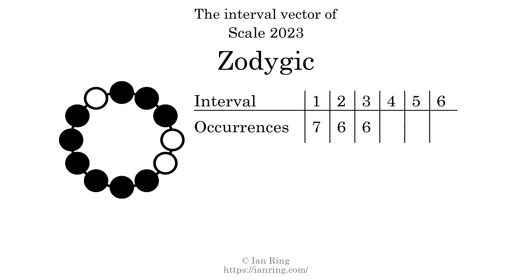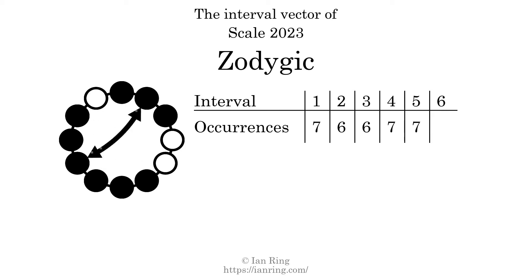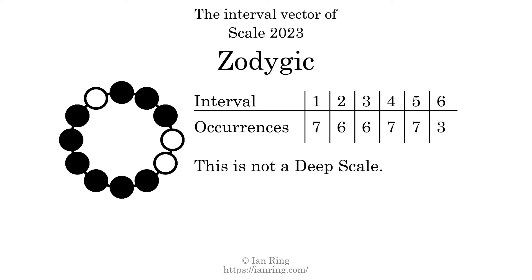There are 7 intervals with the size of 4 semitones. There are 7 intervals with the size of 5 semitones. There are 3 intervals with the size of 6 semitones. Each interval does not appear in this scale a unique number of times, so this is not a deep scale.